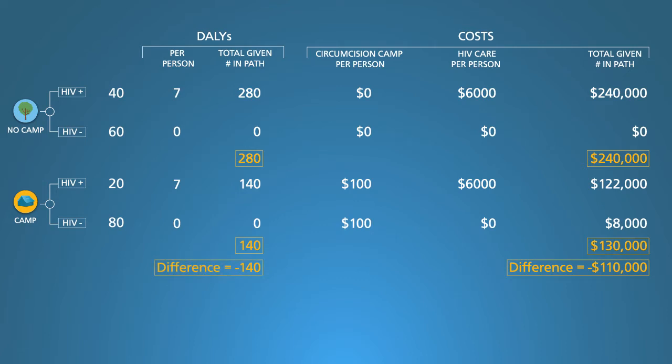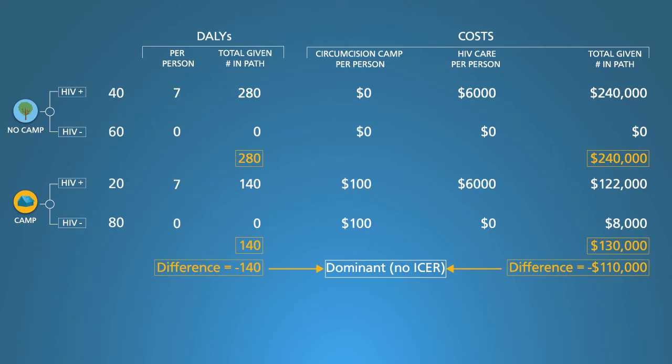Since the camp reduces DALYs and also saves money, we say it is dominant — both better and cheaper. By the way, the best evidence for male circumcision definitely supports the idea that you save more money than you spend. Thus, as we can see in this table, male circumcision is an efficient strategy.